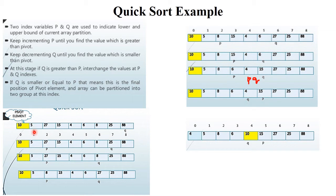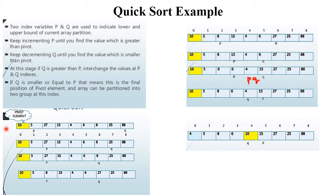Let's take the first step. Start implementation always with P. Check: is P smaller than pivot? 5 is smaller than 10 — condition true, so P is incremented. Now check 27: is 27 smaller than 10? No — condition false, so move to Q. Now check with Q: is 88 greater than 10? Condition true, so Q is decremented. Check 25: greater than 10 — condition true, so Q decrements again.